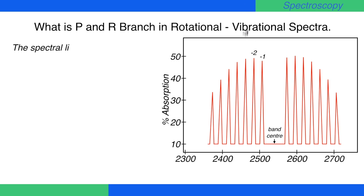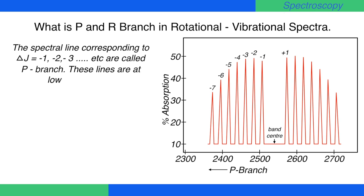The spectral lines corresponding to delta J equals minus 1, minus 2, minus 3, etc., are called P branch. These lines are at lower frequency.